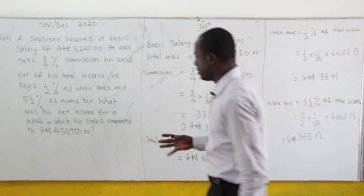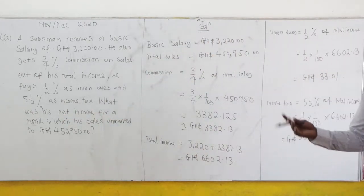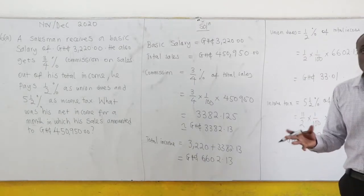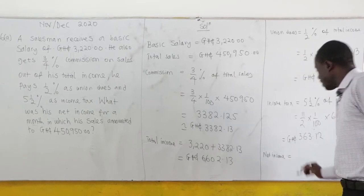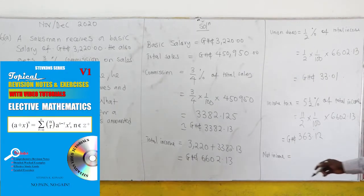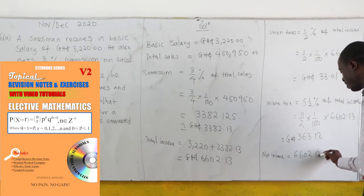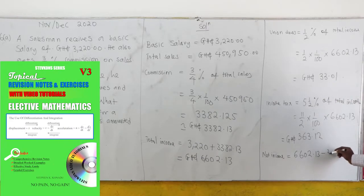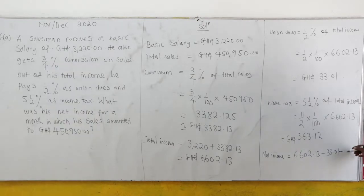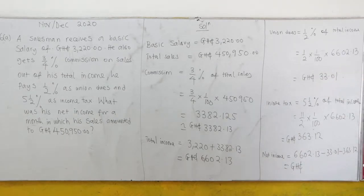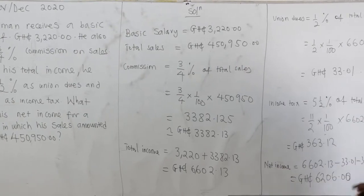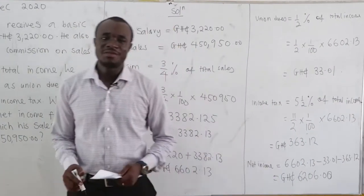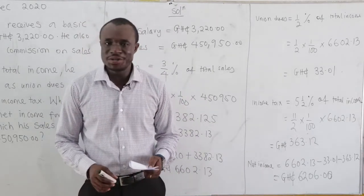The question asks for the net income for the month. Net income is the gross total income minus the deductions. So net income equals 6602.13 minus union dues of 33.01 minus income tax of 363.12, which gives us 6206.00 cedis. This is the net income.